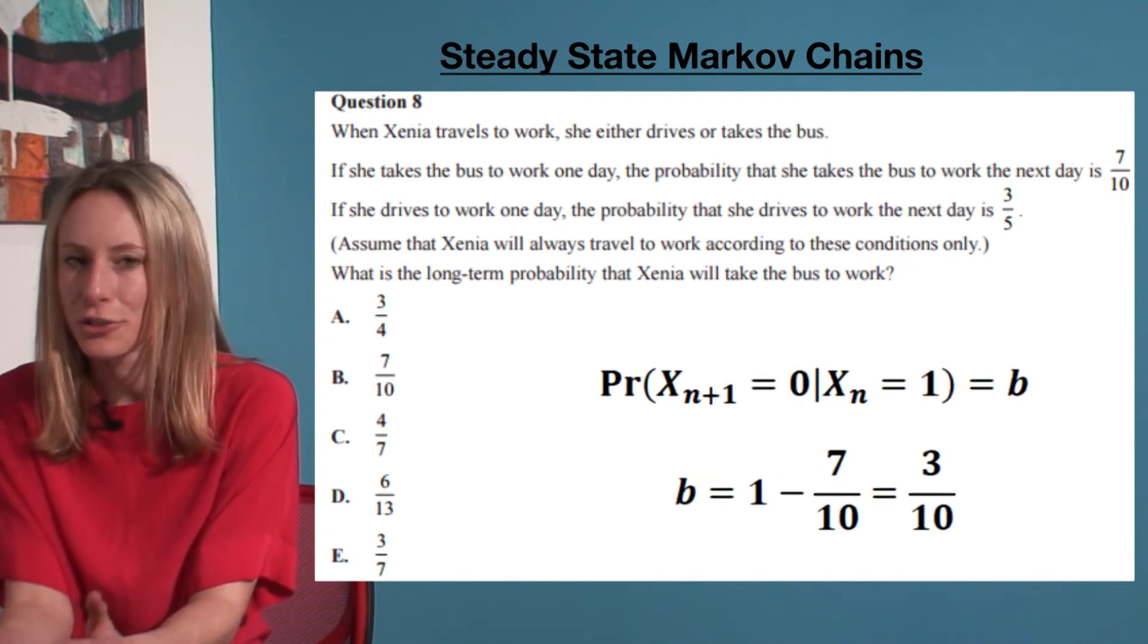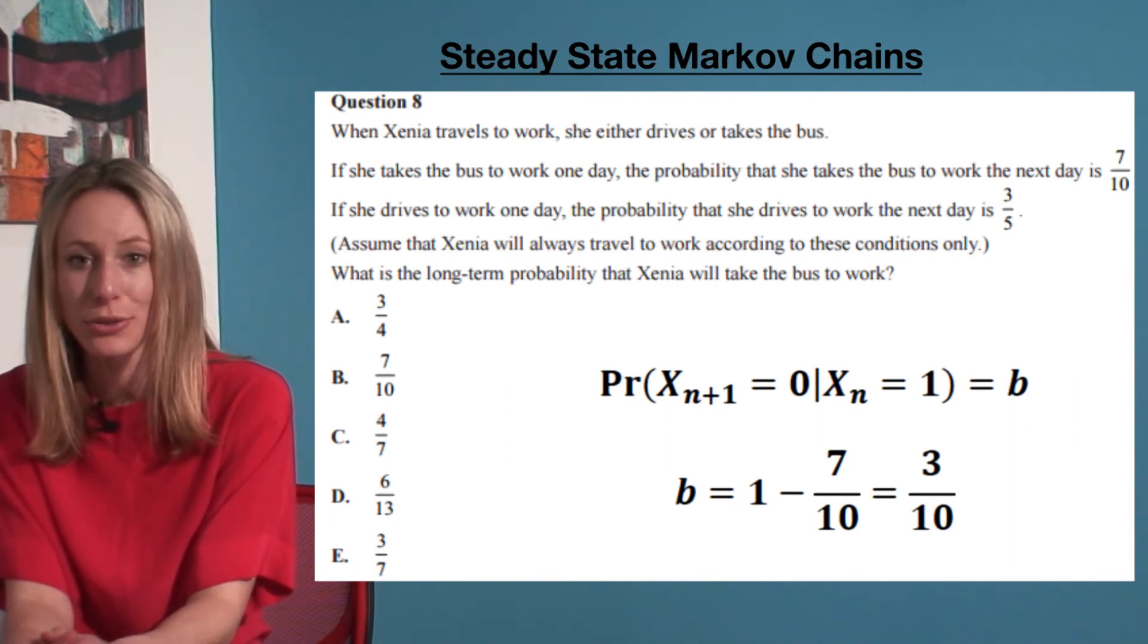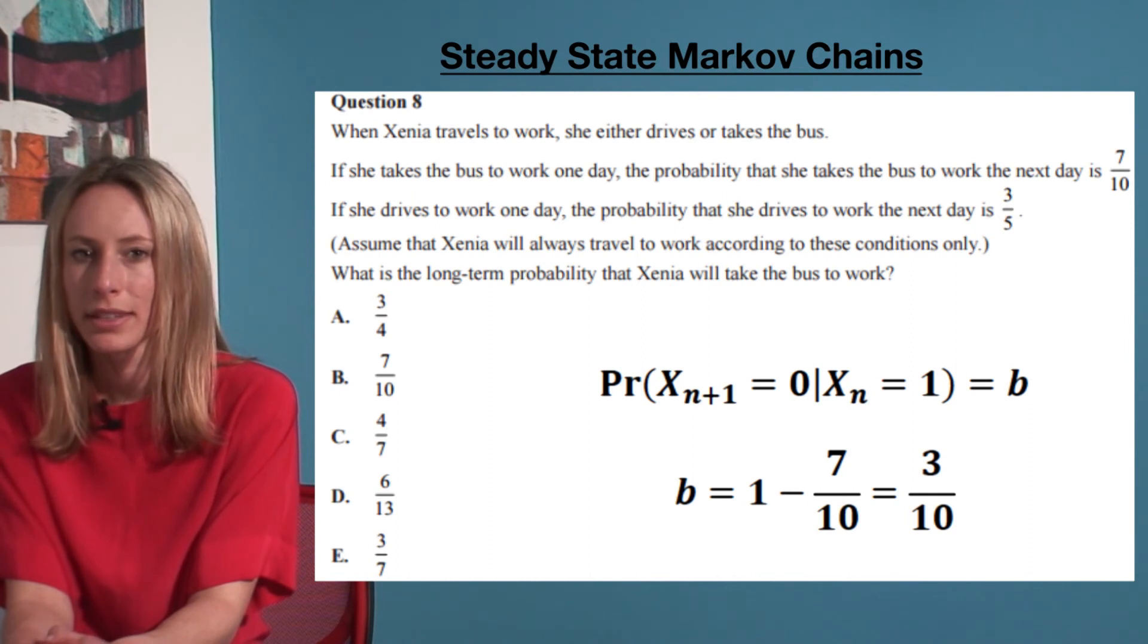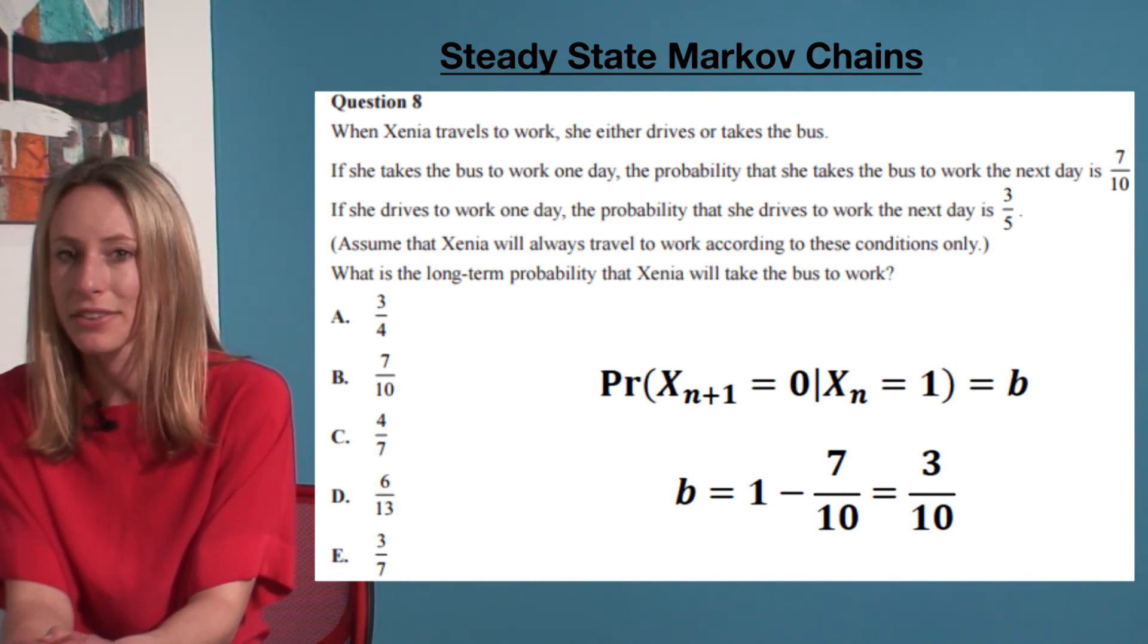The probability that she drives (state zero) today given that she took the bus yesterday (state one) equals b. This is 1 minus 7/10, which equals 3/10.